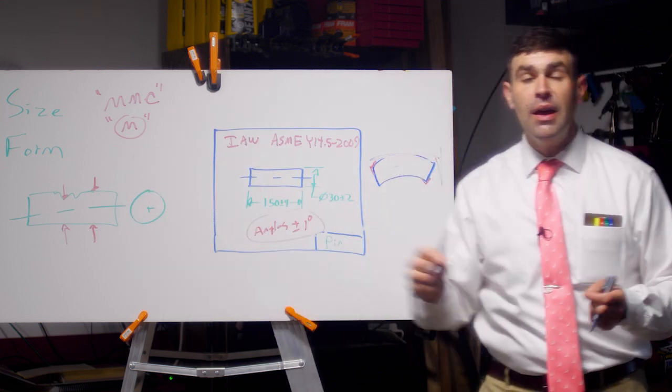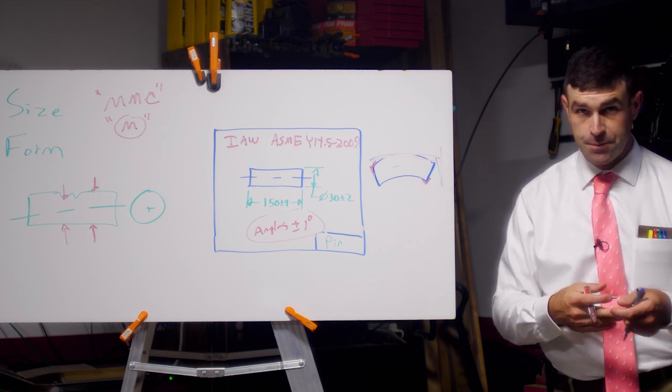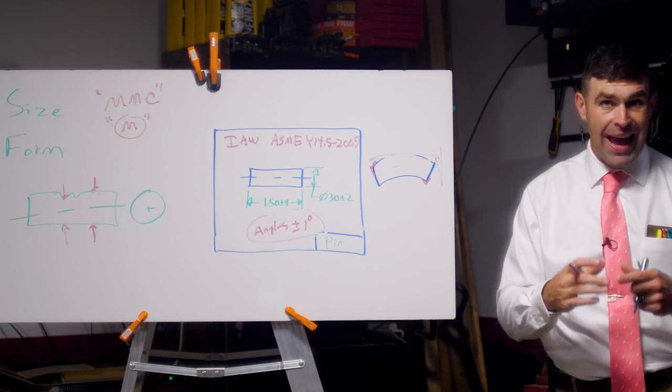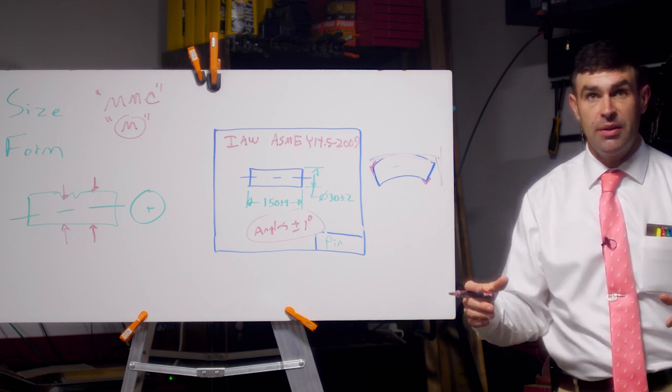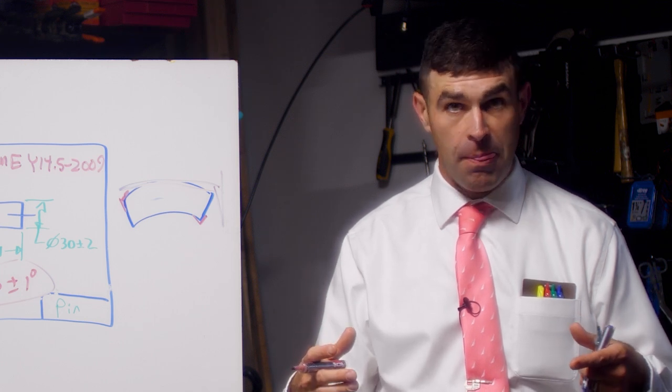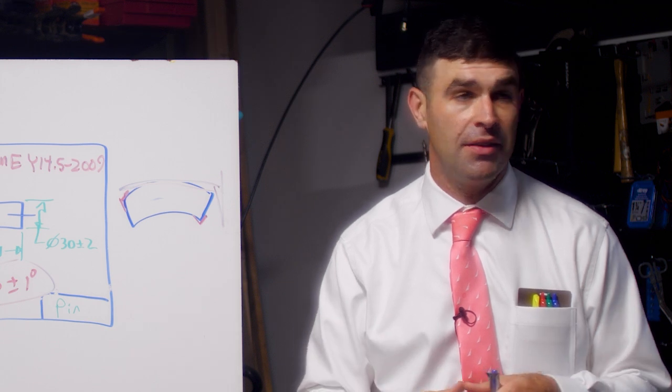What's maximum material condition? Maximum material condition is a condition in which the feature has the most material. For an external feature, like a pin or a tab or a width, it's going to be when it's at its largest size. So in this case, the MMC of our pin is 30 millimeters plus two millimeters, so 32 millimeters is our maximum material condition size.